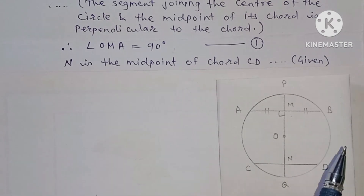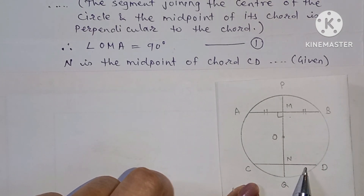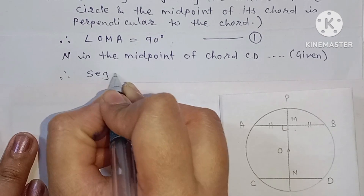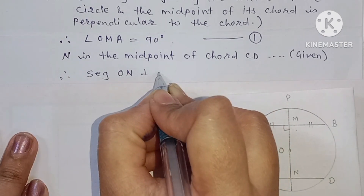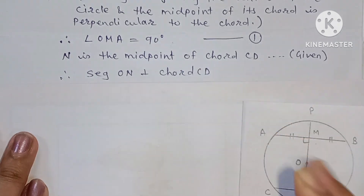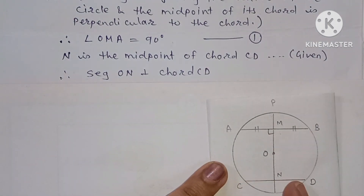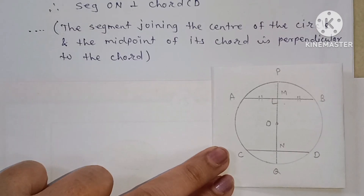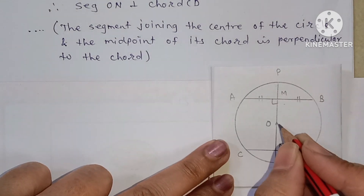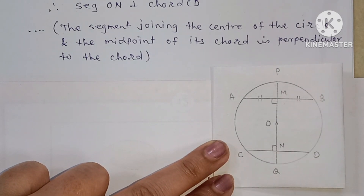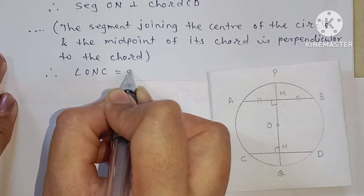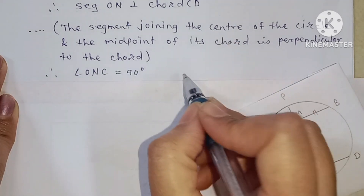Similarly, N is the midpoint of chord CD. Therefore, segment ON is perpendicular to chord CD. The reason is the same: the segment joining the center of the circle to the midpoint of the chord is perpendicular to the chord. Therefore, angle ONC = 90°. This is equation number 2.